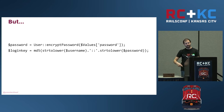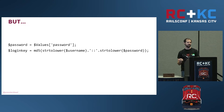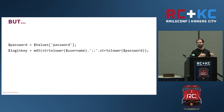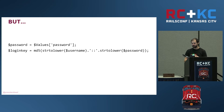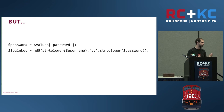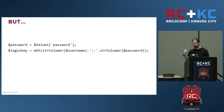They looked in the git history and found that this code used to look different — it used to just hash the lowercase password directly. So that was pretty interesting, because they knew the username and they knew the login key, and they know how it's constructed, so now you can calculate billions of MD5 hashes a second. This was a good place to start.